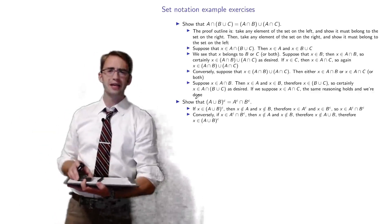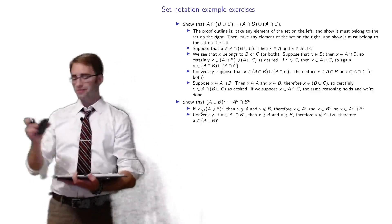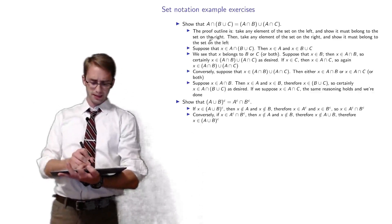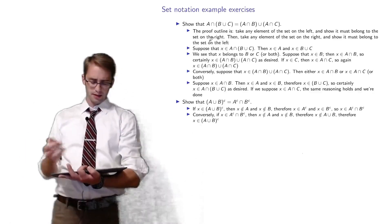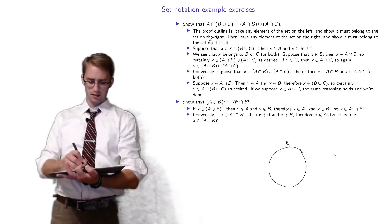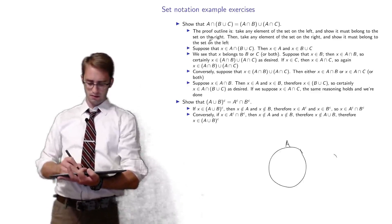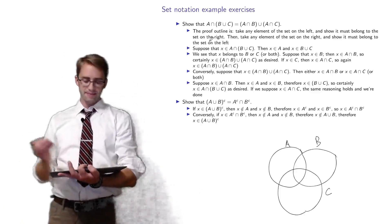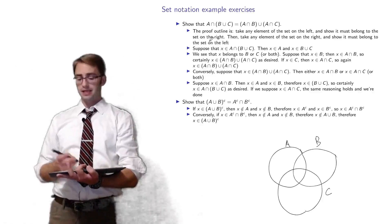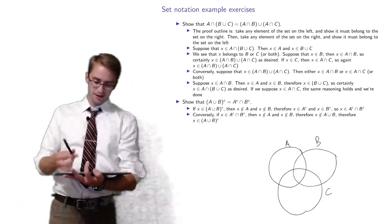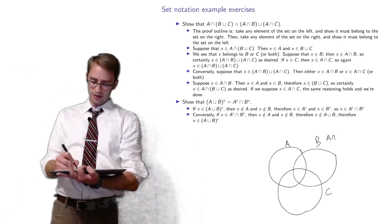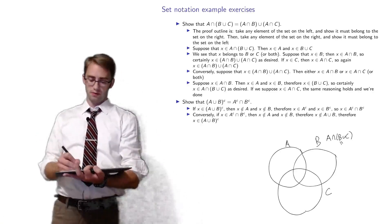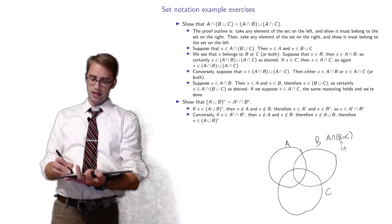The first identity says: A intersect (B union C) equals (A intersect B) union (A intersect C). The second asks you to prove that the complement of (A union B) equals the complement of A intersect the complement of B. Let's draw A, B, and C in a Venn diagram — here's set A, here's B, and here's C — to demonstrate the first identity.